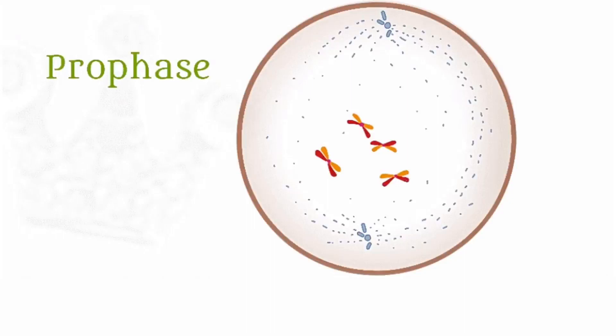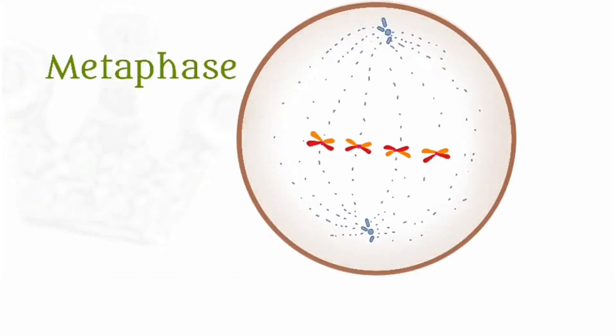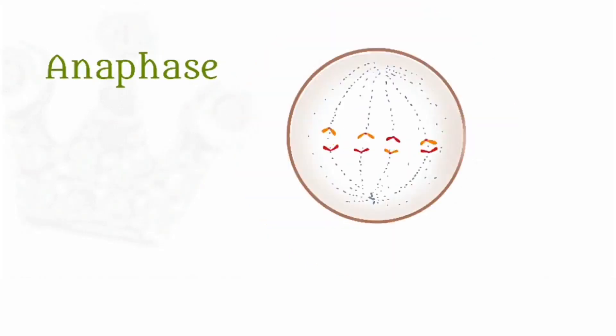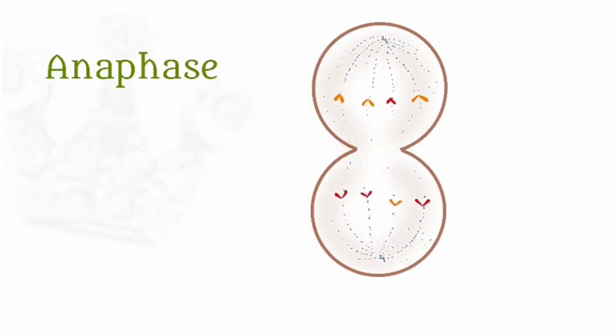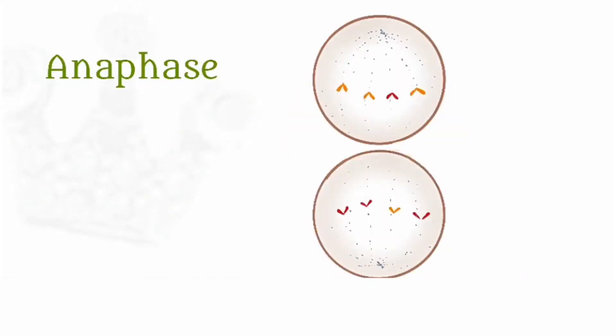Then comes the metaphase, where the chromosomes line up in the equatorial line, followed by the anaphase where the centromere splits so that the chromatids separate and become independent chromosomes.